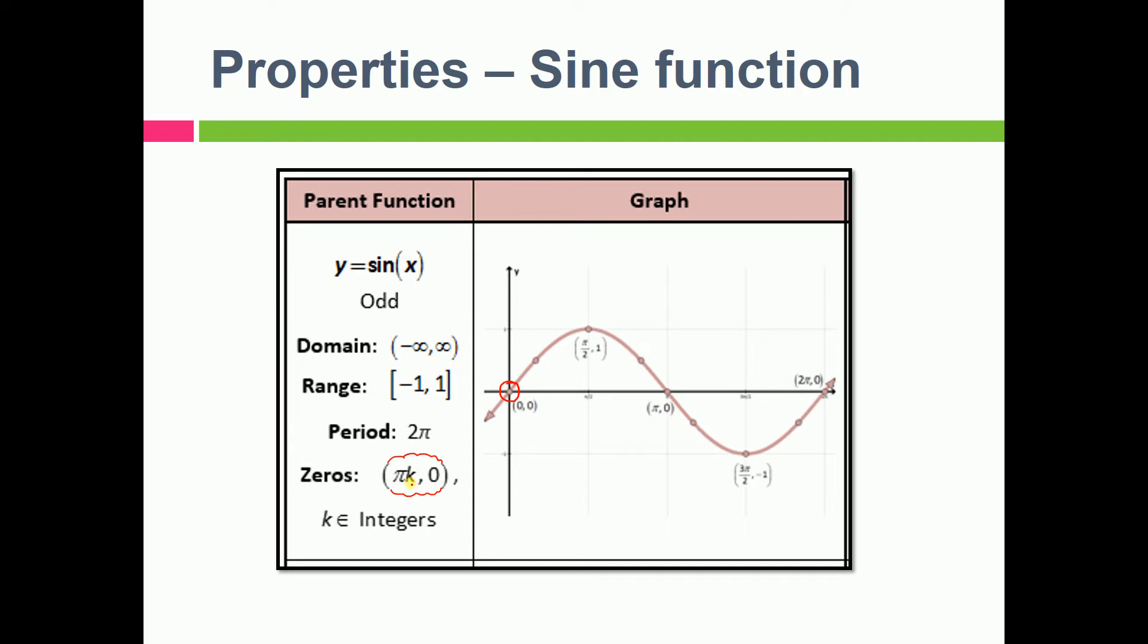So zeros as you can see we have πk comma zero. That means k is an integer. So if you put k as zero, so this will be 0 comma 0, so the first zero you will get here. Second zero, where? At π. Put the value of k as one, you will get π comma zero, so you will get the second zero out here, third zero out here and so on. So zeros means the coordinates or the points where the graph or the function cuts the x-axis.